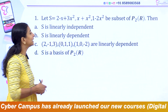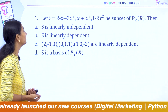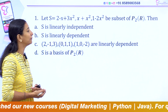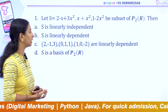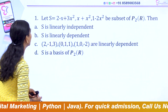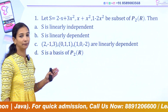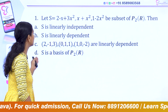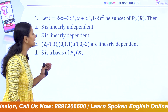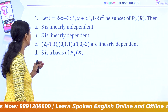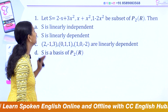Let S equal to {x + x², 1 − 2x²} be a subset of P2(R). Then: S is linearly independent, S is linearly dependent, the vectors (2, −1, 3), (0, 1, 1), (1, 0, −2) are linearly dependent, or S is the basis of P2(R).